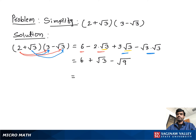So we have 6 plus square root 3, and square root 9 is 3. Then we subtract 3 from 6. We get 3 plus square root 3, which is our final answer.